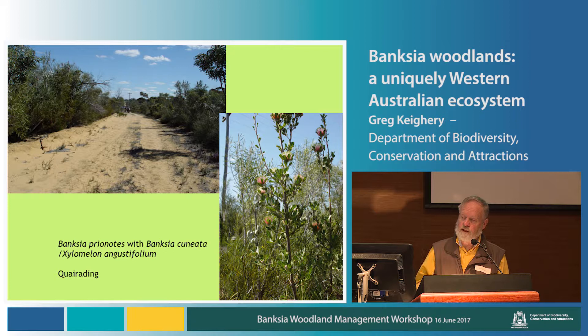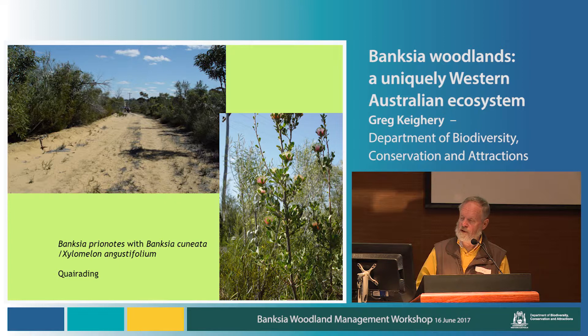Banksias in the Wheatbelt that form woodlands do tend to occur on large, isolated sand patches — some to the north of Perth, some to the south and east. At Quiriding, this is the only large patch of this community remaining; the Shire is about 96% cleared, so this 200-hectare patch is a very significant area. We have a decent amount of floristic data on this, but it has not been collated. There is no doubt that there are a series of quite rare Banksia woodlands scattered through the Wheatbelt.